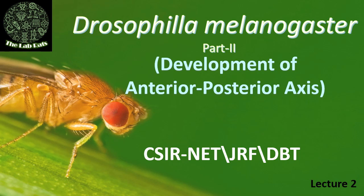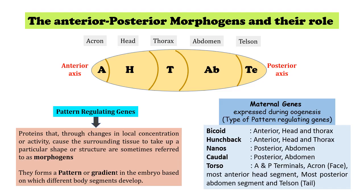Please watch that video and if you like it, do not forget to subscribe to my channel for more upcoming videos. So let's get started with today's topic. What are the different morphogens that help in formation of anterior and posterior axis in Drosophila, and what are their roles?